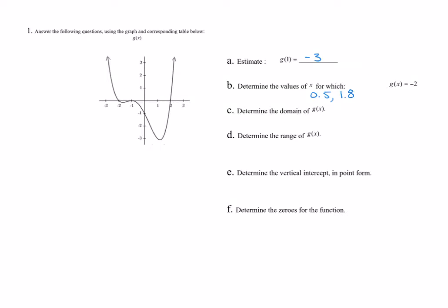Next, we want the domain of g of x. Our domain — remember, it is a polynomial function — is all real numbers, or negative infinity to infinity. We can also look at our graph: notice that this arrow goes forever to the left, and this one goes forever to the right. For our range, when we look at graphs, we go bottom to top. My bottom value is about negative 3, and it is equal to negative 3, so I'm going to put that in brackets. And how far up do we go? We do have arrows that go forever up, so this is negative 3 to infinity.